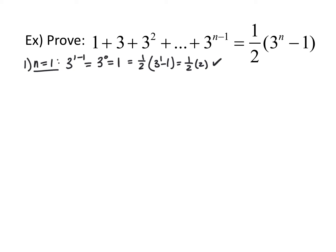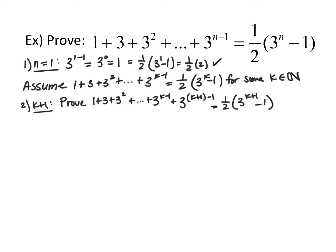Step 1, prove it's true for n equals 1. Plugging in 1 on the left side gives 3 to the 1 minus 1, which is 3 to the 0, and anything to the 0 power is 1. On the right side, one-half times the quantity 3 to the first minus 1 equals one-half times 2, which is also 1. Proved for n equals 1. Next, assume it's true for some k: 1 plus 3 plus 3 squared plus ... plus 3 to the k minus 1 equals one-half times 3 to the k minus 1. For k plus 1, we want to prove 1 plus 3 plus ... plus 3 to the k minus 1 plus 3 to the k equals one-half times 3 to the k plus 1 minus 1.